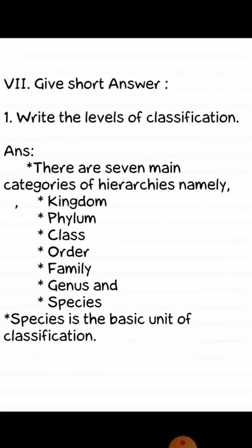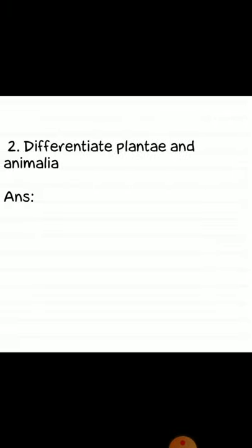Short answer section. First question: write the levels of classification. Answer: there are seven main categories of hierarchy, namely kingdom, phylum, class, order, family, genus, and species. Species is the basic unit of classification.